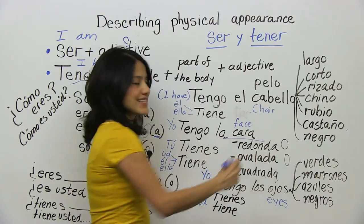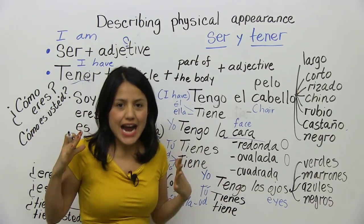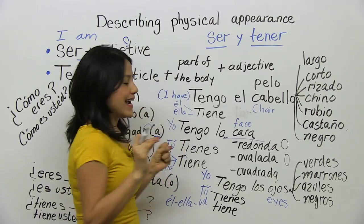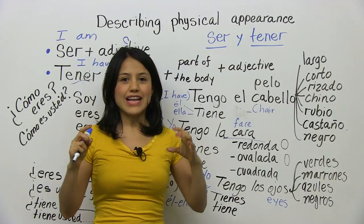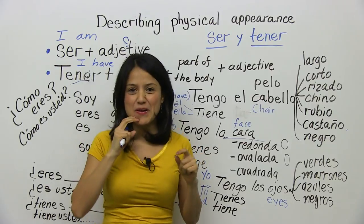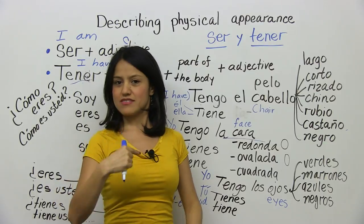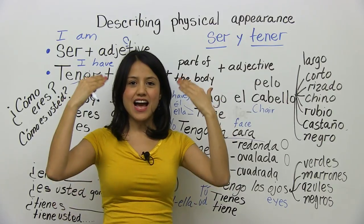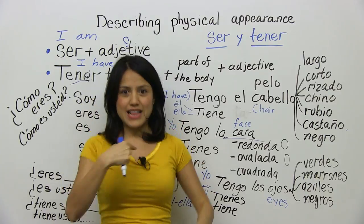Now, my face — cara, la cara. Tengo la cara redonda — I have a round face. Tengo la cara ovalada — I have an oval face. Tengo la cara cuadrada — I have a square face, like Spongebob. Tengo la cara alargada — a very long face. Redonda, cuadrada, ovalada.